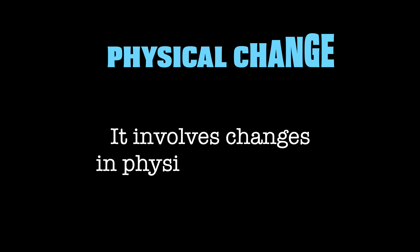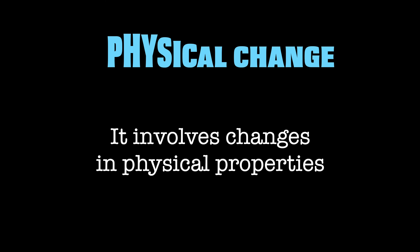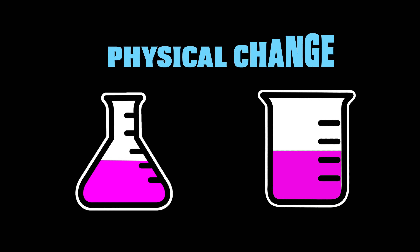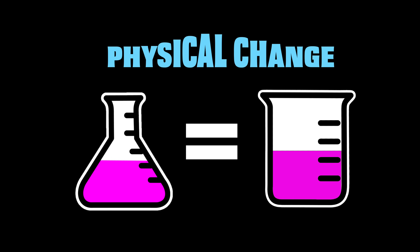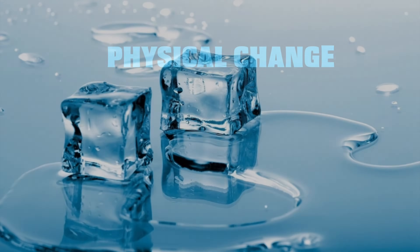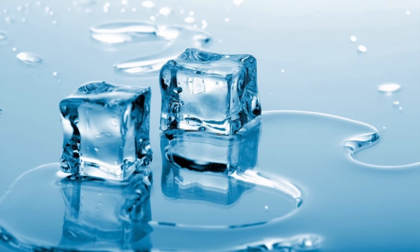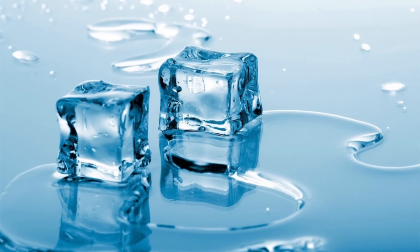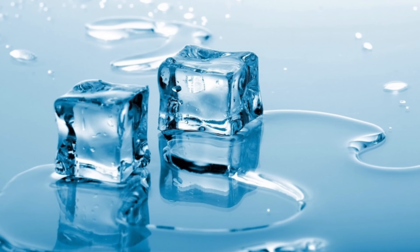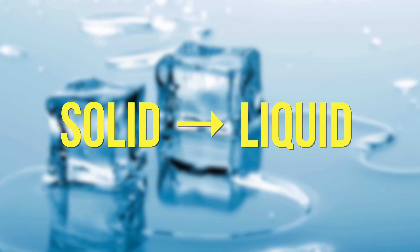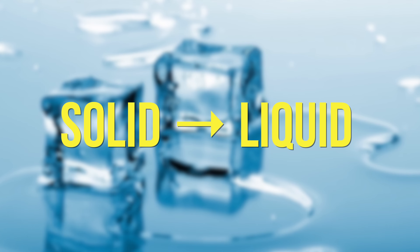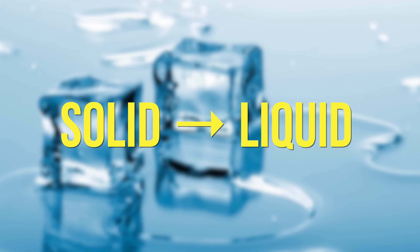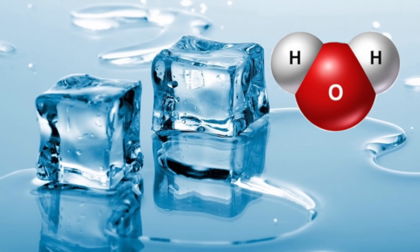A physical change involves changes in physical properties. The starting and end materials of a physical change are the same, even though they may look different. For example, melting an ice cube is a physical change. Energy has been added to create a phase change from solid to liquid. However, no chemical changes took place here — the water molecules are still water molecules.